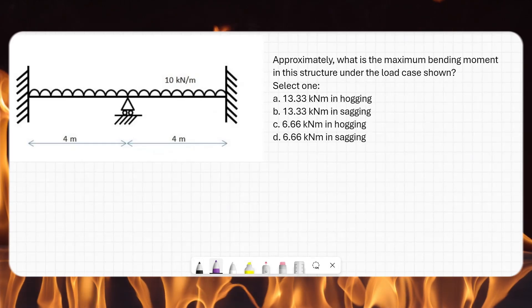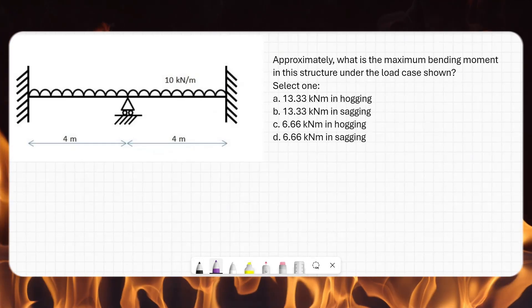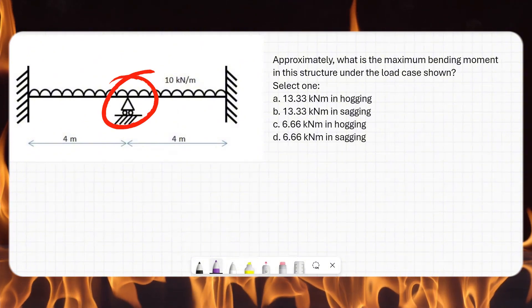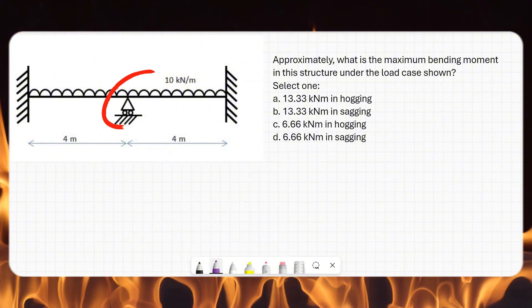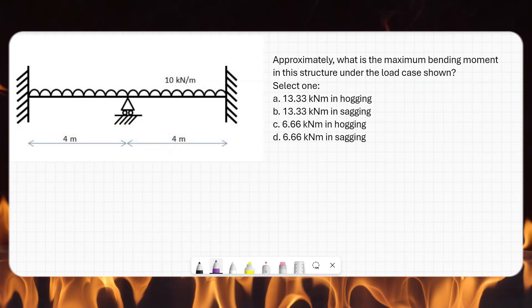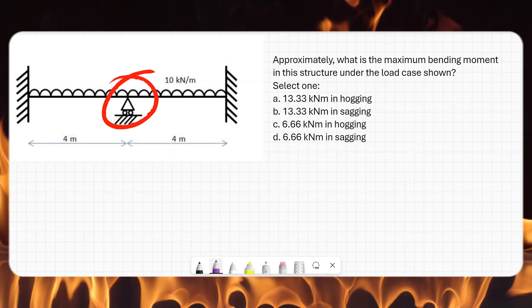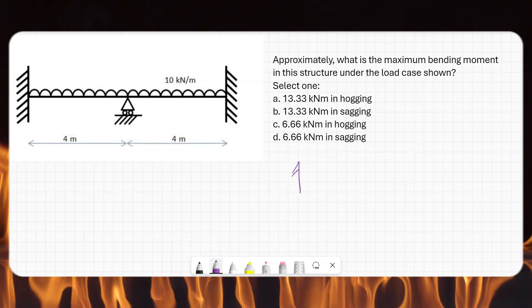For this particular question, when loading is symmetric, we can treat the intermediate support as a fixed support and say that it will resemble the fixed end moment. So what is the formula for fixed end moment?